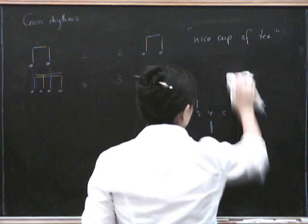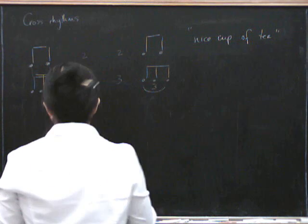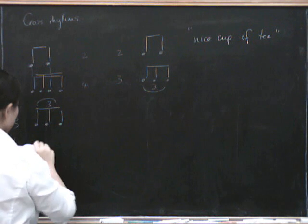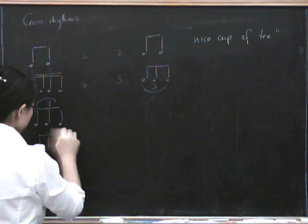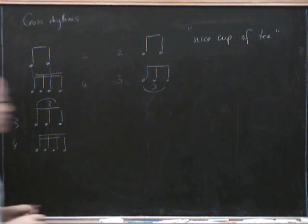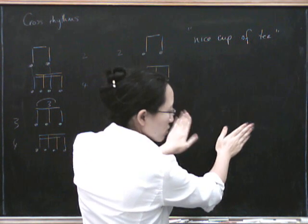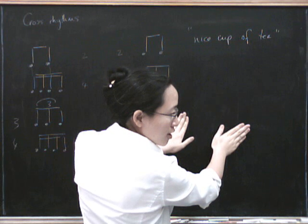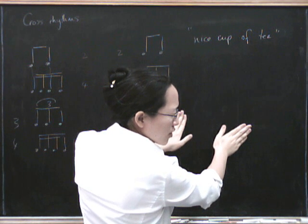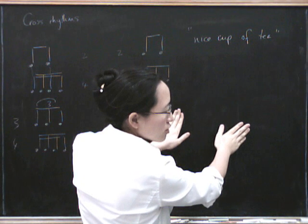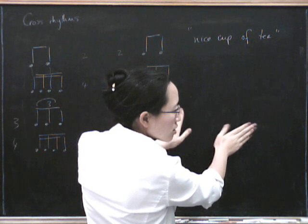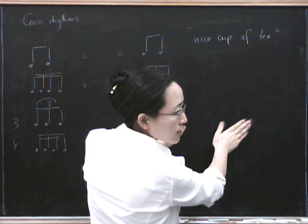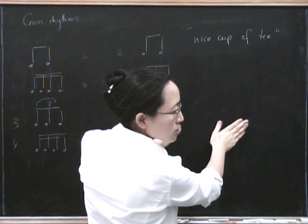Three against four is like playing triplet quavers against semi-quavers. You might have learned this as 'pass the goddamn butter, pass the goddamn butter' — putting emphasis on the 3: 1, 2, 3, 1, 2, 3. You can also say 'I'm clever, you're a fool, I'm clever, you're a fool' with the four going 1, 2, 3, 4.